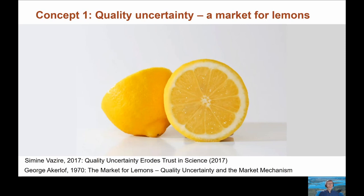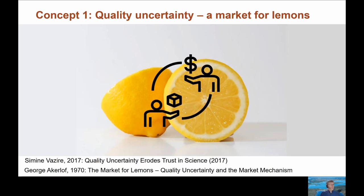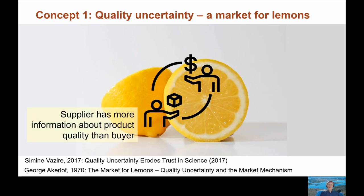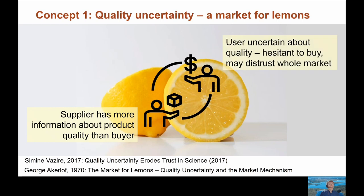The first concept is quality uncertainty. This idea runs to the heart of the connection between quality and trust. The broader impact quality can have on trust in science was raised by Professor Simone Vizier at the University of Melbourne, building on the Nobel economics prize-winning ideas of George Akerlof about how quality uncertainty impacts a market. The concept is that the relationship between a buyer and seller — or in our case a data user and data supplier — is asymmetric. The seller has more information about the quality of the product than the buyer does. In Akerlof's example this was used cars: the potential buyer doesn't know if the car has been looked after or had dodgy parts installed.